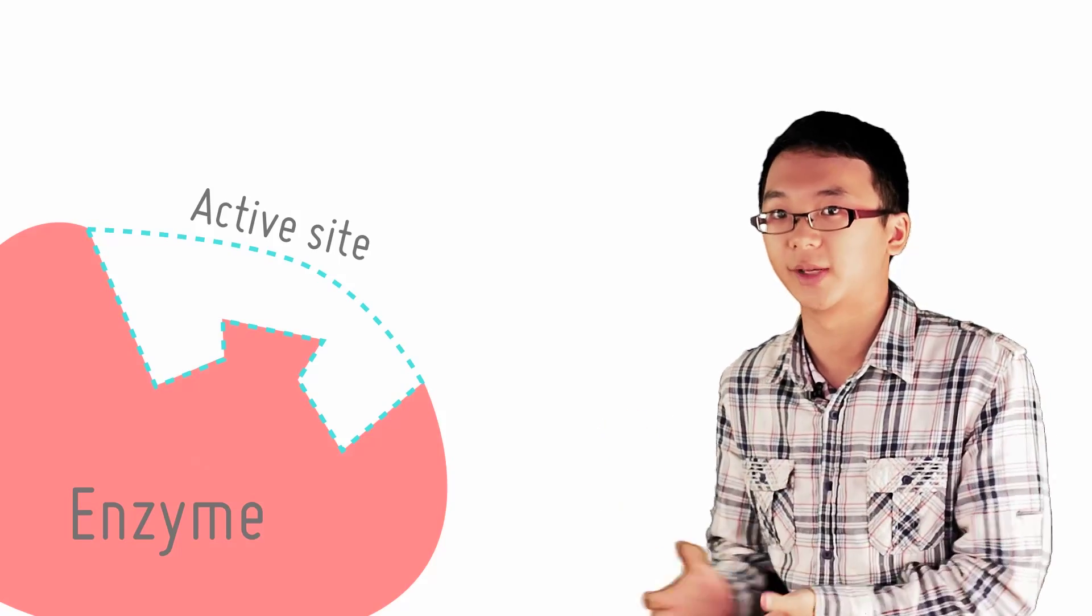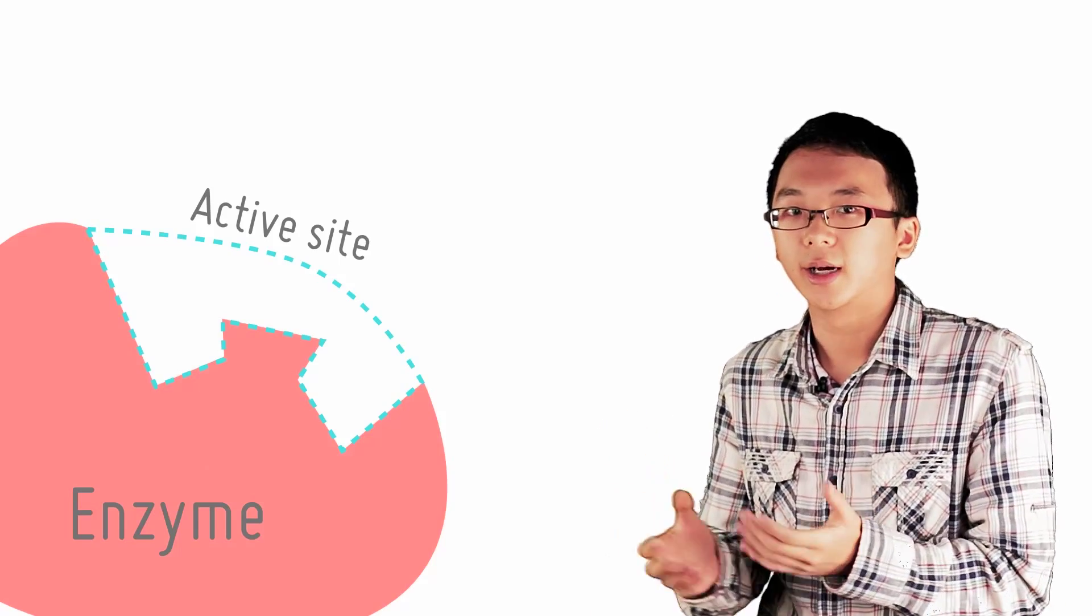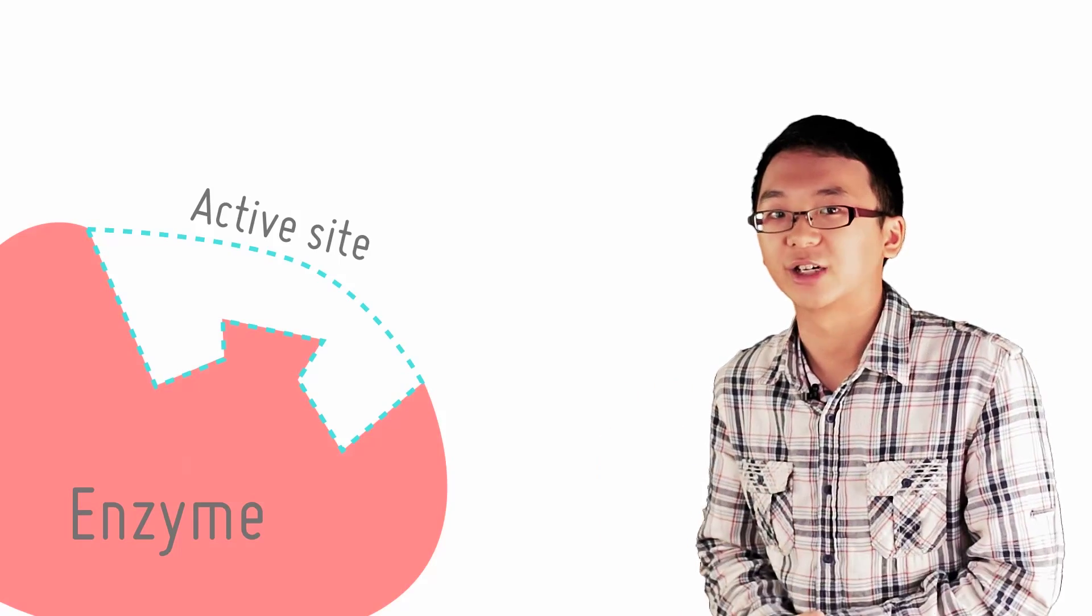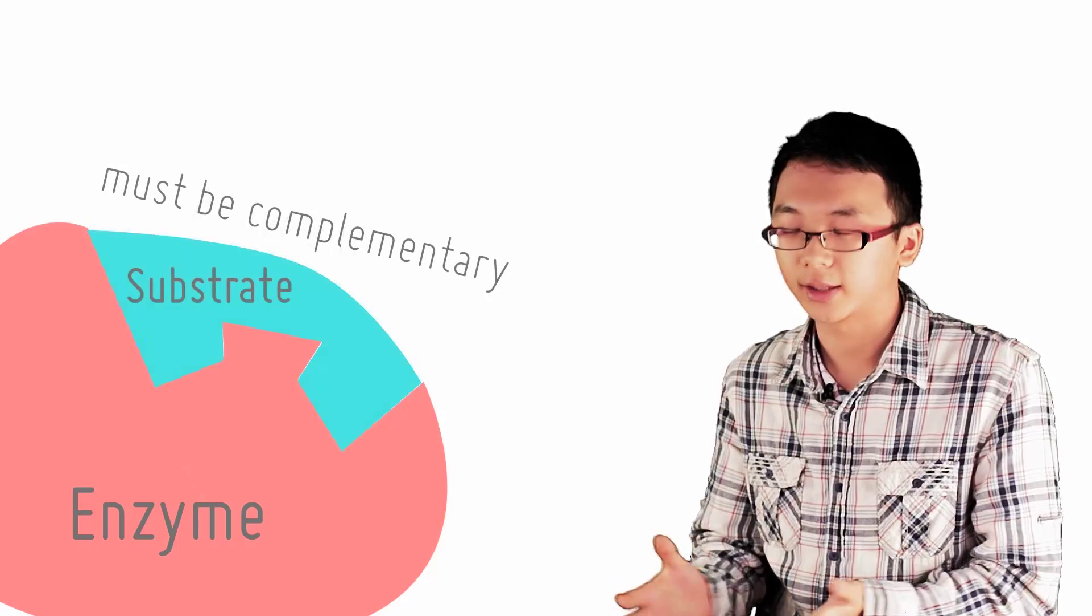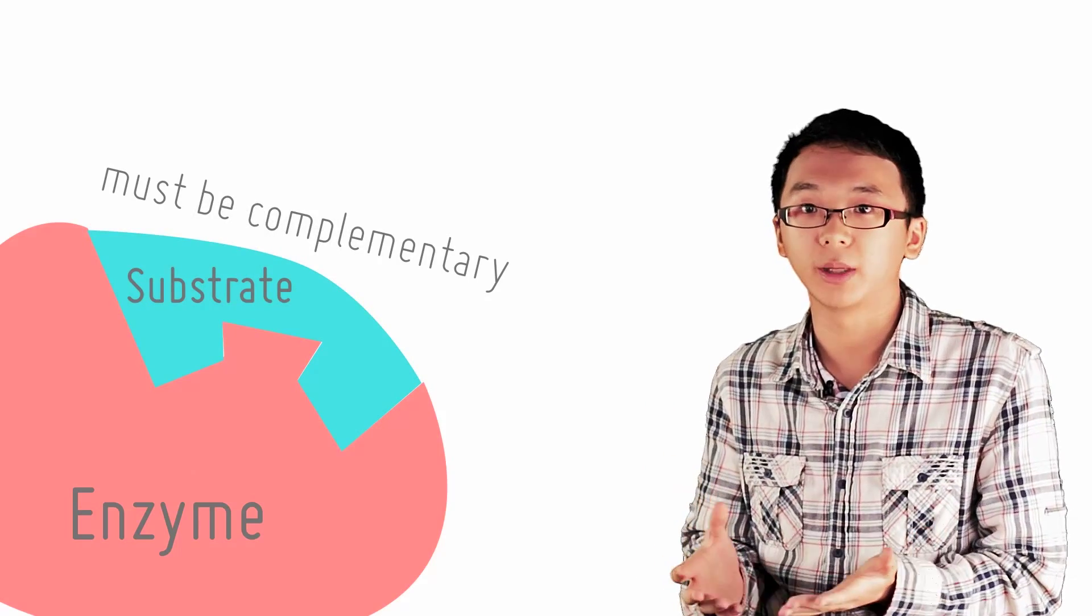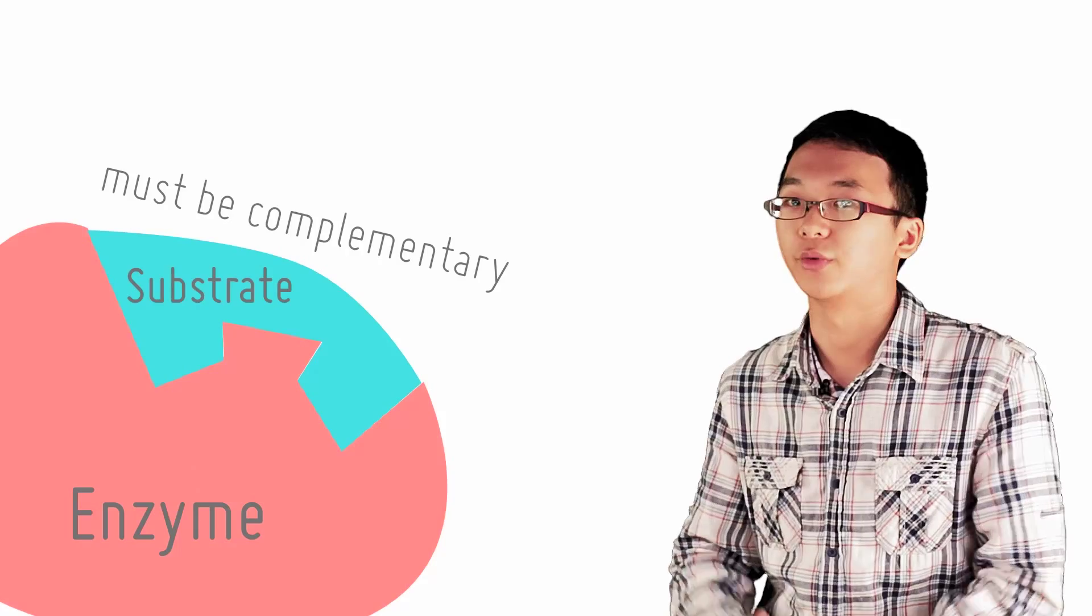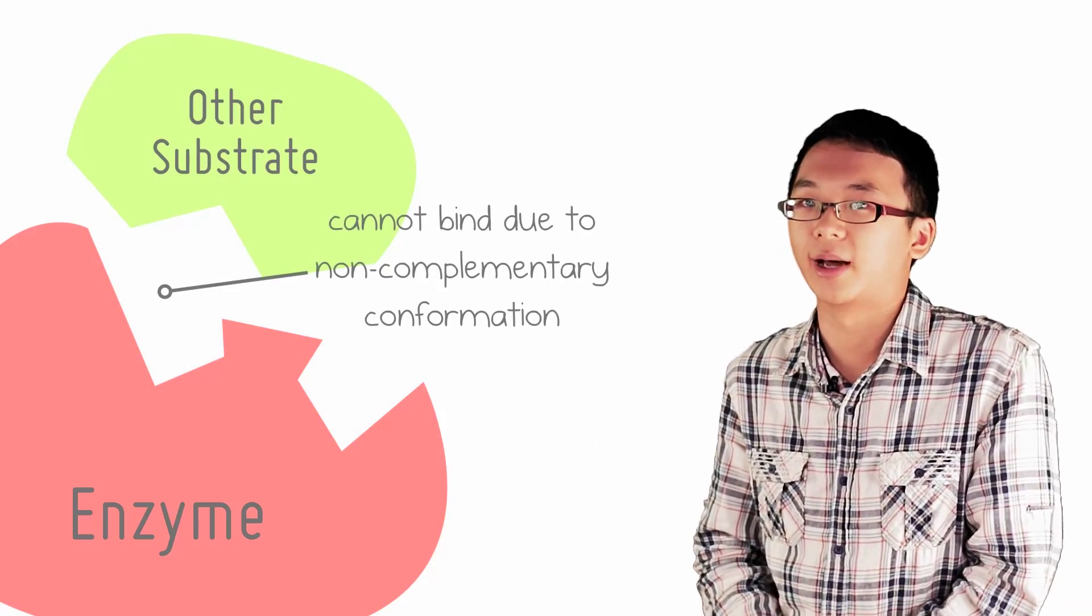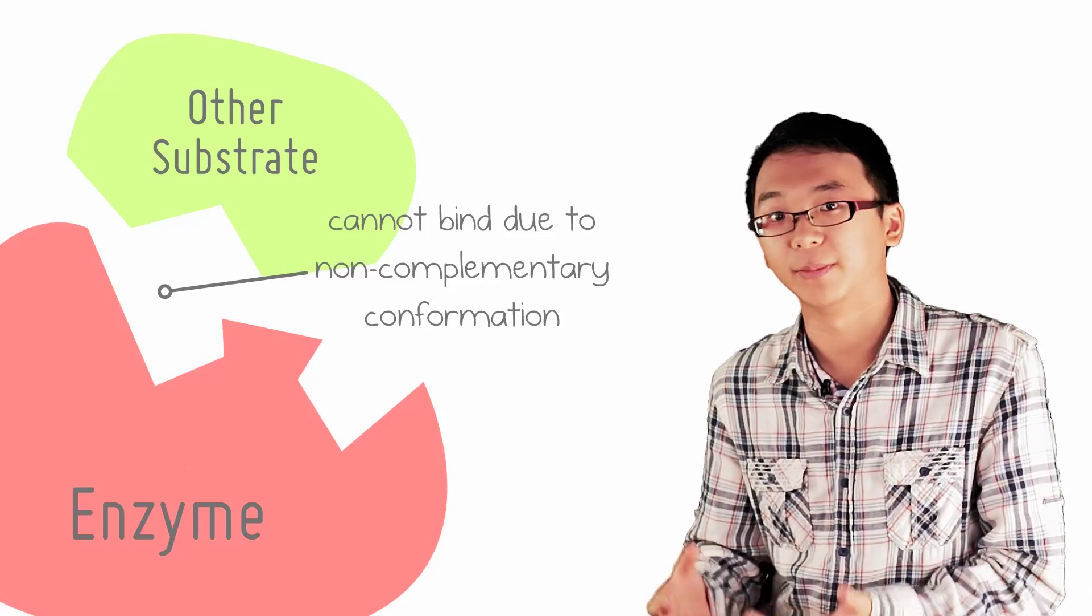Each enzyme is reaction-specific, which means that for each enzyme, it is only capable of catalyzing one reaction. This is because the active site must be complementary to the substrate in order to form an enzyme-substrate complex for the reaction to take place. If the substrate doesn't fit the active site and can't bind properly, no reaction can be catalyzed.